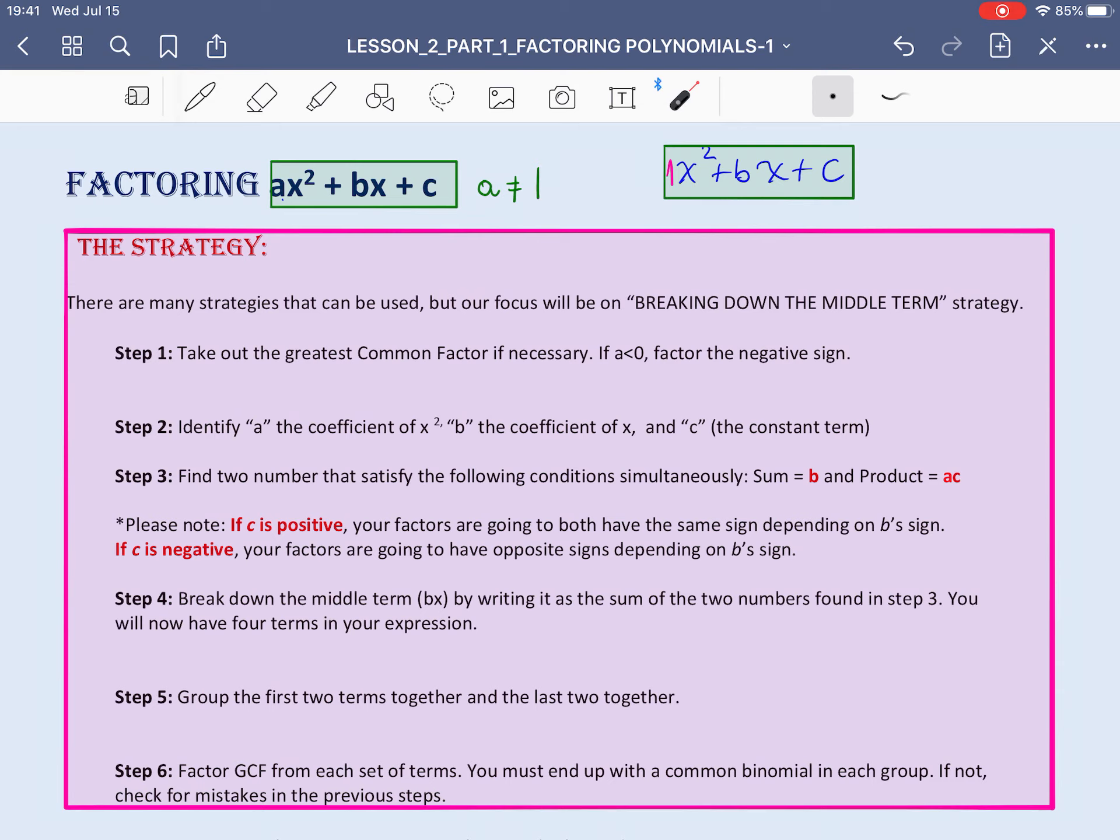Let's get started. In order to factor this polynomial, we have to use a strategy that is called breaking down the middle term strategy. Now, step number 1, no matter what kind of polynomial you are factoring, should always be take out the greatest common factor. You want to do that because that will reduce your coefficients greatly and make the factorization much easier. If a is less than 0, it's still considered a factor that must be taken out. You want to take the negative sign out because the negative sign in front of x² will complicate things a lot if we don't take it out.